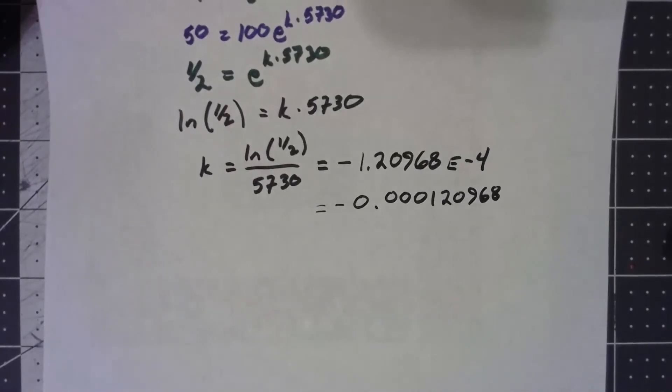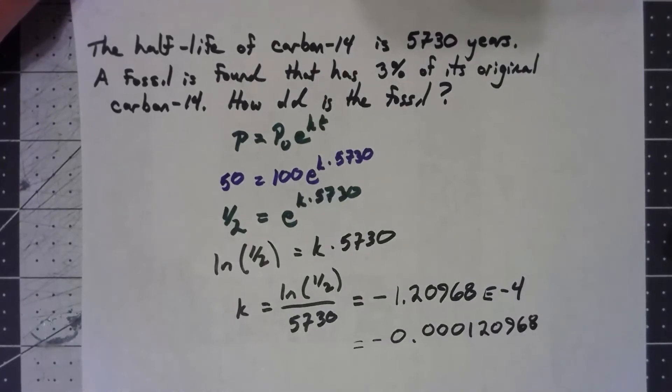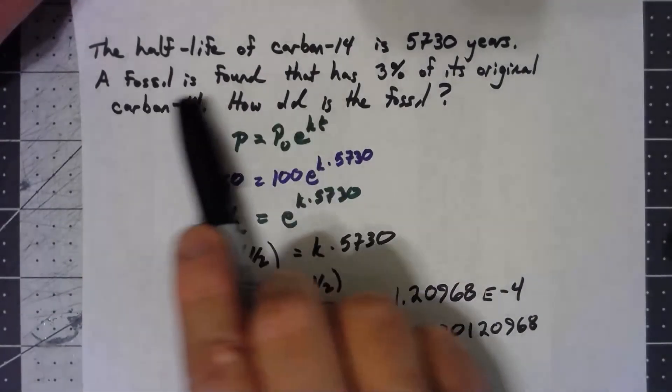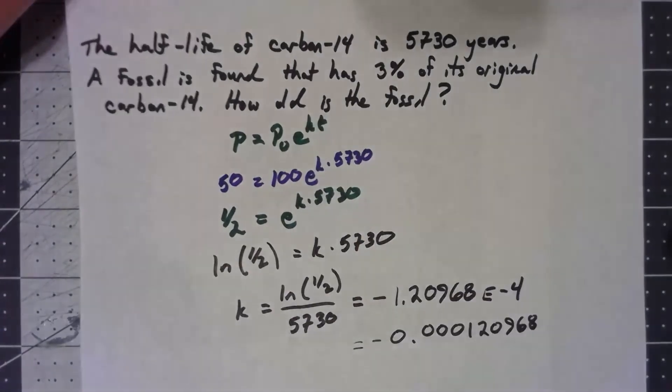Okay, now that I've got that K, now we can go about doing the problem. And it's actually very similar to what we just did here. The fossil we found has 3% of its original, and we're trying to find how old the fossil is.